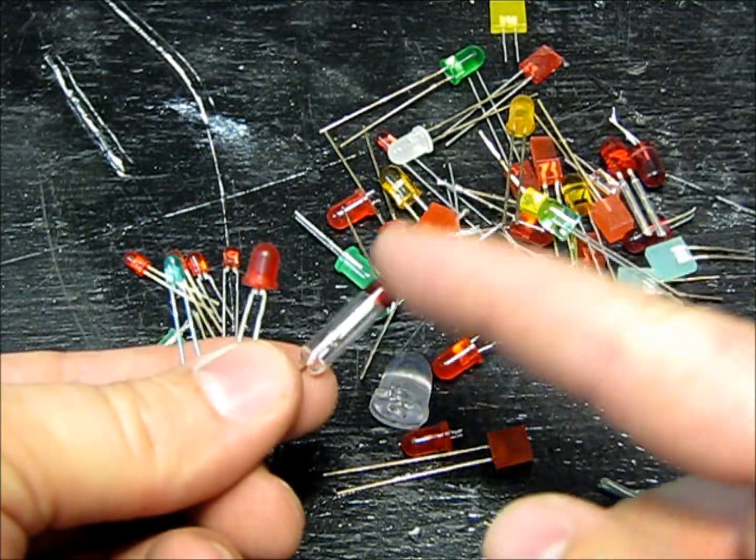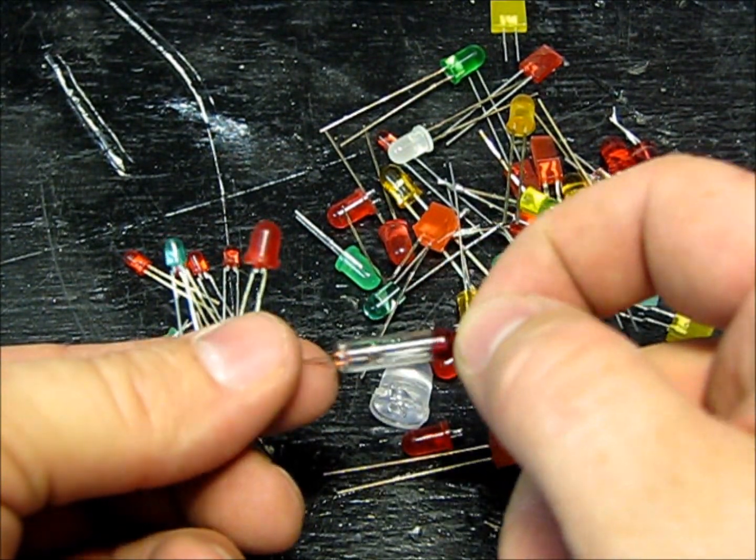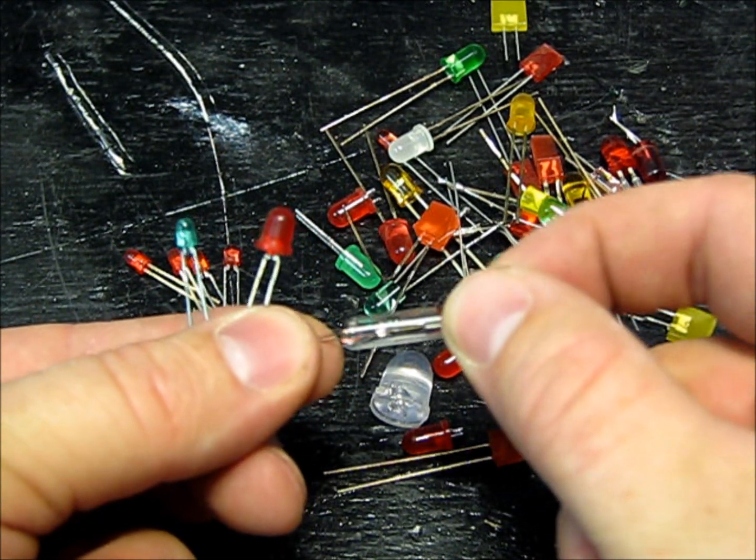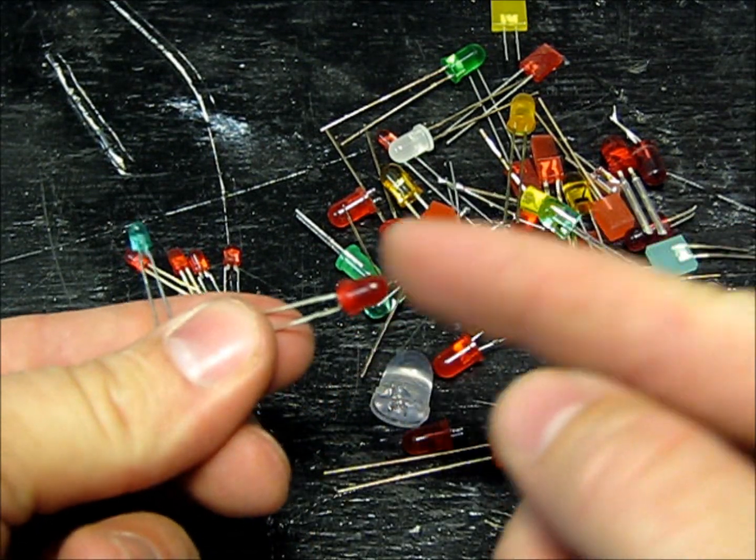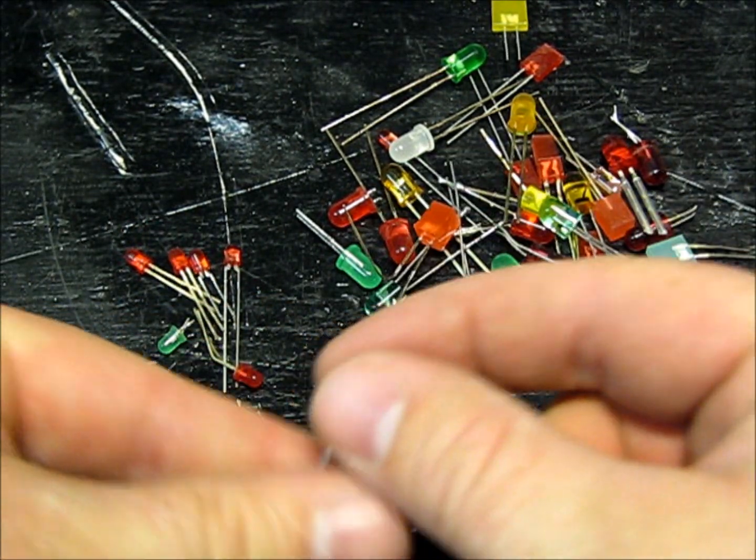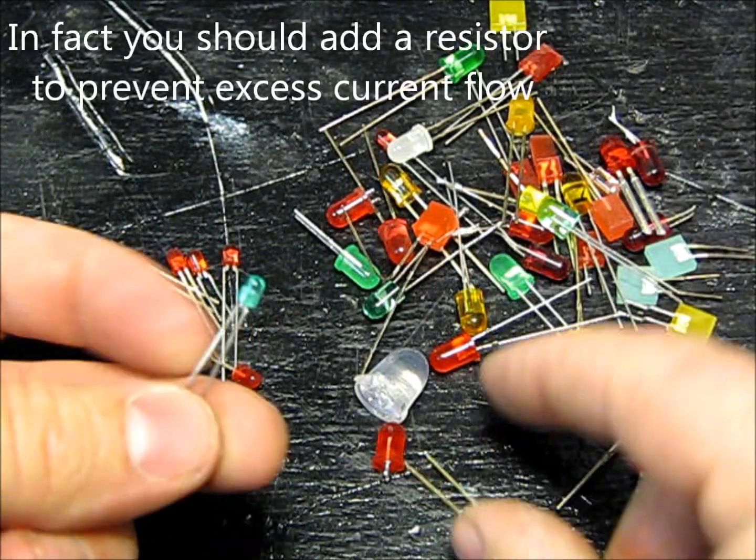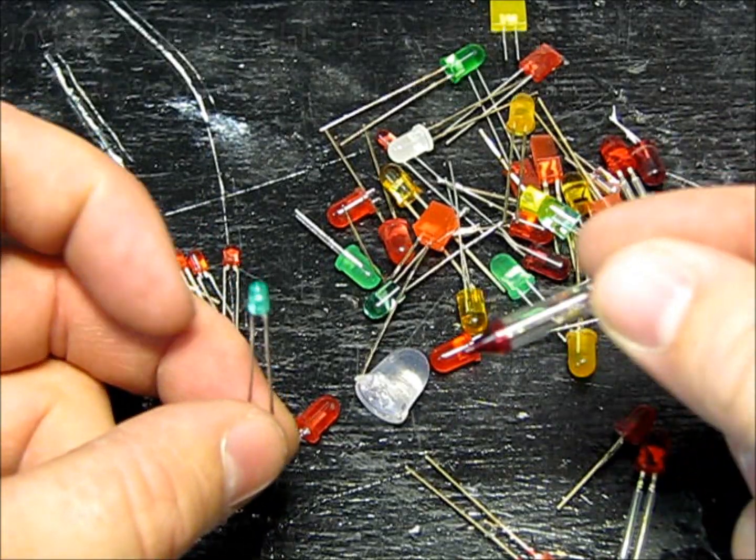Just to give you a little example, this is a regular incandescent Christmas tree light bulb. It pulls about 80 milliamps. This little guy, I just tested it, pulls about 40 milliamps. This little guy pulls about 10 milliamps, so they pull quite a bit less electricity than incandescent bulbs.